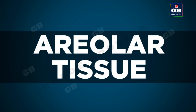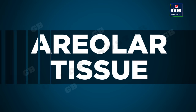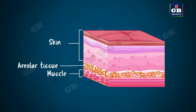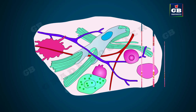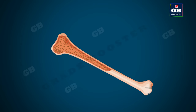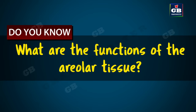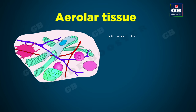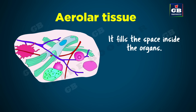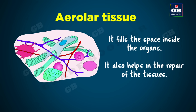The next one is areolar tissue. This tissue is present between skin and muscles. It wraps the blood vessels and nerves. It is also present in the bone marrow. Areolar tissue fills the space inside the organs and helps in the repair of tissues.